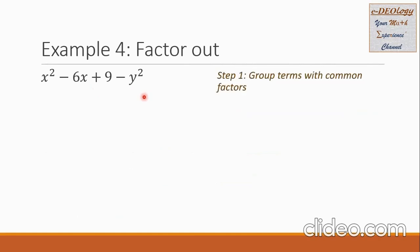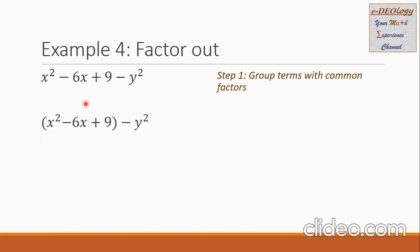Let us have example 4: factor out x squared minus 6x plus 9 minus y squared. Step 1: group terms with common factors. If I group the first two terms, there is a common factor x. However, if I group the last two terms, there is no common for those two. So this is a special case — it is possible to group the first three terms: x squared minus 6x plus 9 as one group, and the negative y squared alone.